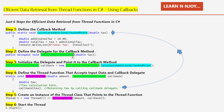Step 2: Define the delegate for the callback method. We need to create a delegate that matches the callback method's signature. I've created a delegate named 'CalculateTaxCallback'. If you notice, the callback method and delegate have the same signature — return type is void and the input parameter is of double data type. If you're new to delegates, I have a dedicated video which I'll link in the description.